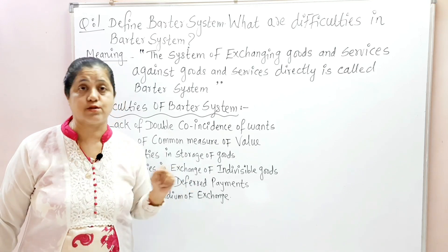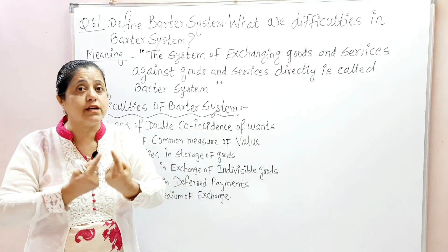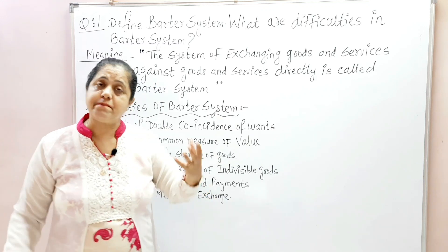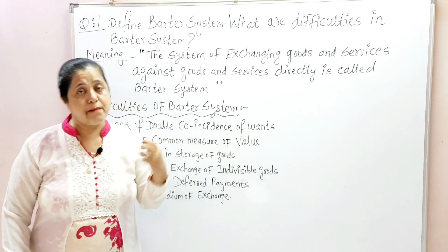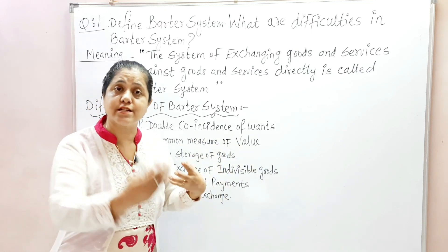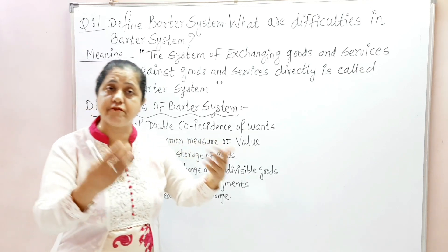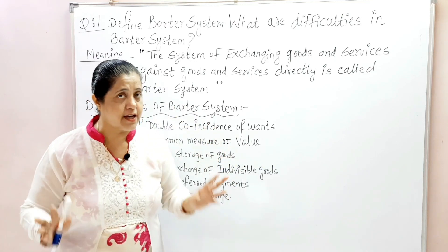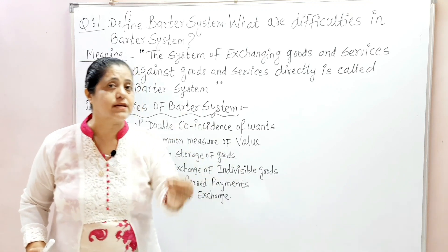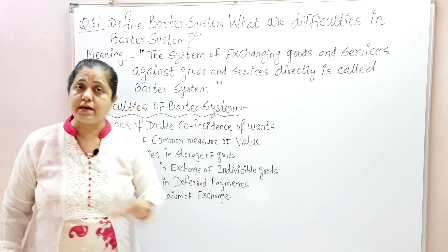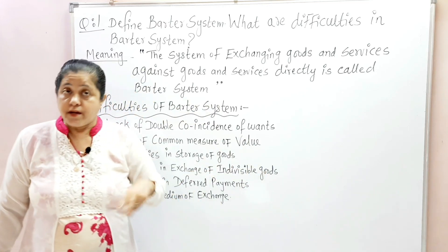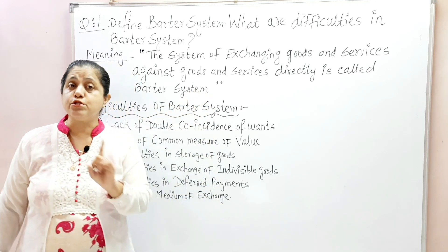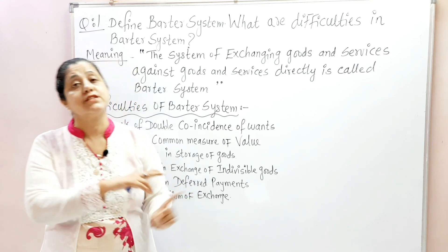Double coincidence of wants means both parties' requirements must match exactly. Suppose I am growing rice and I have a very good stock. I want to exchange rice for dal — I need a farmer who has different types of pulses, so he gives me dal and I give him rice. Now suppose I went to a person who has different pulses available, but he is not ready to exchange for rice — he wants wheat.